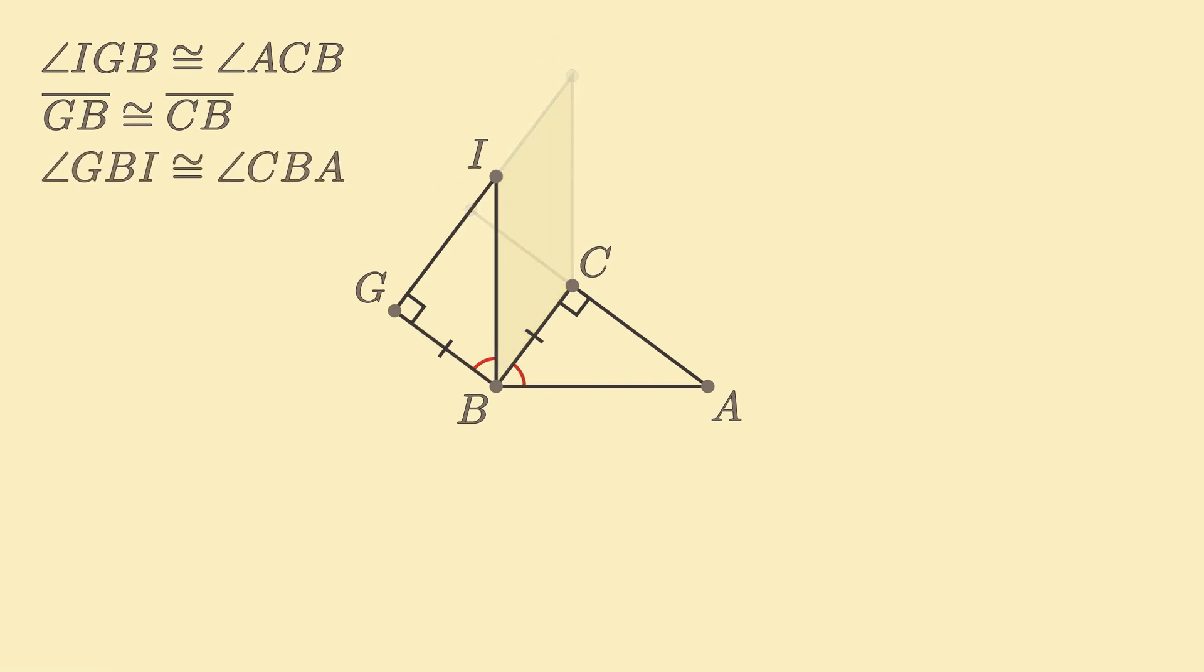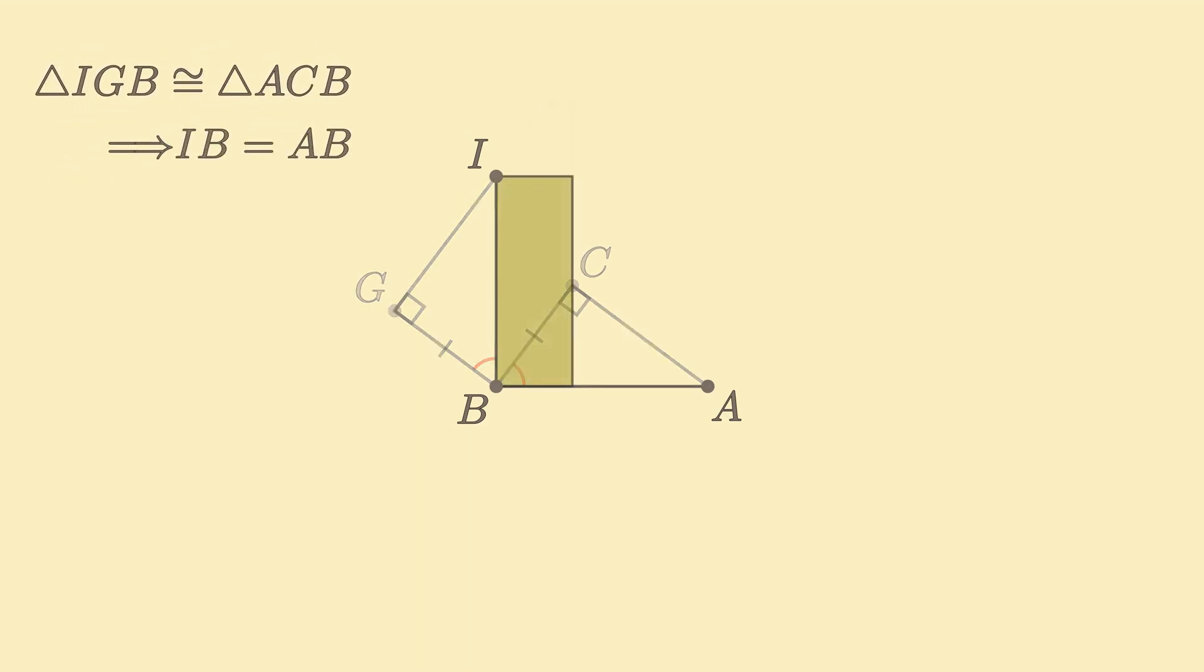Therefore, triangles ACB and IGB are congruent by ASA, meaning IB and AB are both of length c. Hence, the final figure is indeed a square with side length c.